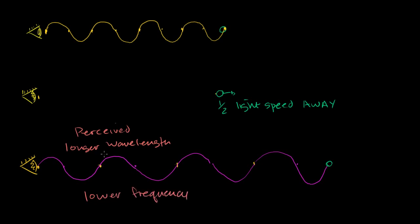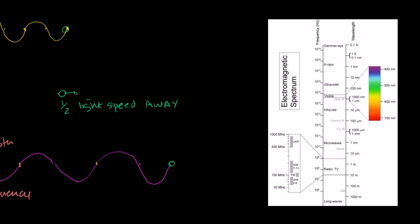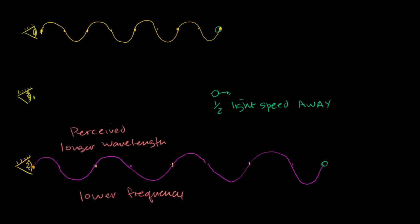What would that do to the perception of the light? Let's say this is green light. Looking at the electromagnetic spectrum, if we were stationary with the observer it would be green light — about a 500 nanometer wavelength. But because the object is moving away from me at this huge velocity, the perceived wavelength becomes wider. From my perception it's going to have a wider wavelength, and it will look redder — it will move towards the red part of the spectrum. This phenomenon is called redshift.